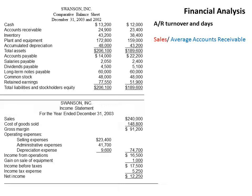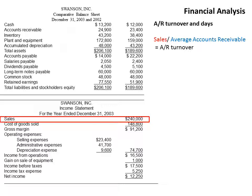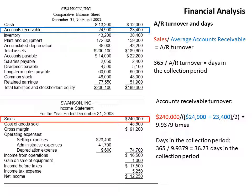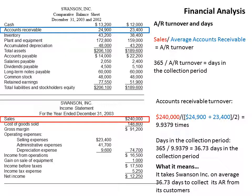Accounts receivable turnover measures how fast the company collects cash owed to them. We take sales divided by average accounts receivable. Sales are $240,000 from the income statement. Average accounts receivable is ($24,900 plus $23,400) divided by two. That gives a turnover of 9.937 times. To find the days in the collection period, take 365 divided by the turnover number, giving 36.73 days. That means Swanson Inc. takes on average 36.73 days to collect receivables — great if they're granting net 45 terms, but concerning if they're granting net 30.